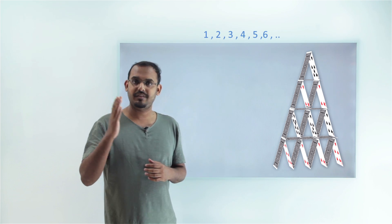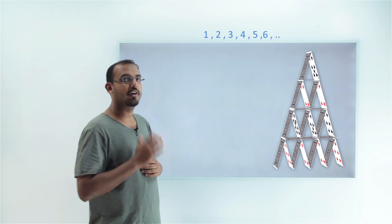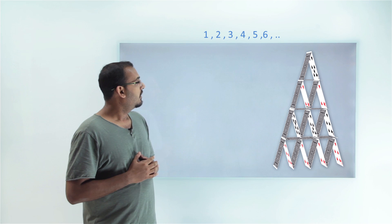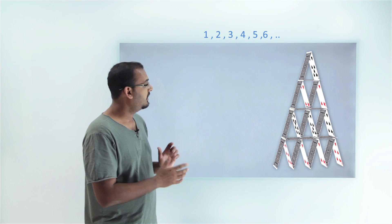Let's take another example to visualize a couple more number patterns. I bet you must have played cards at your homes — have you ever tried to build a house using the cards? Let's build a house of cards and try to visualize a number pattern using it. Let's try to visualize the number sequence 1, 2, 3, 4, 5, 6 and so on. Try to focus on the vertices of the triangles created in this house of cards.